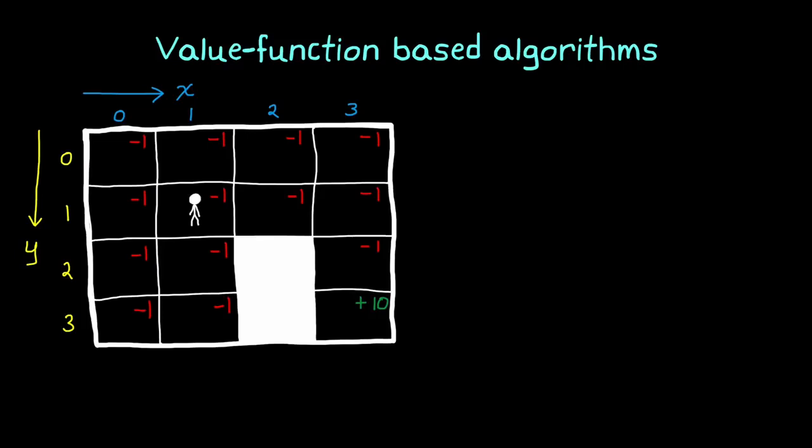The idea is that we want our agent to collect the most reward, which means getting to that positive reward in the fewest moves possible. And the agent can only move one square at a time, either up, down, left, or right.